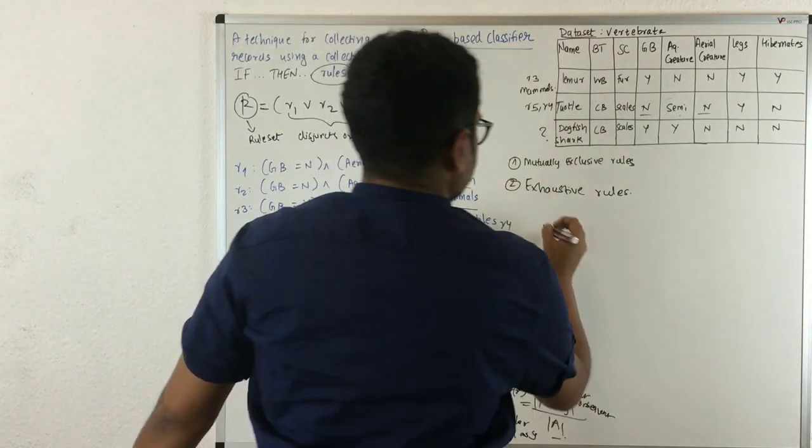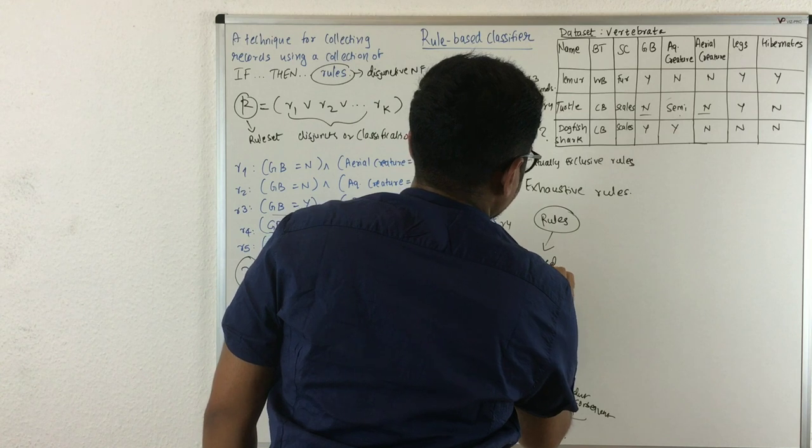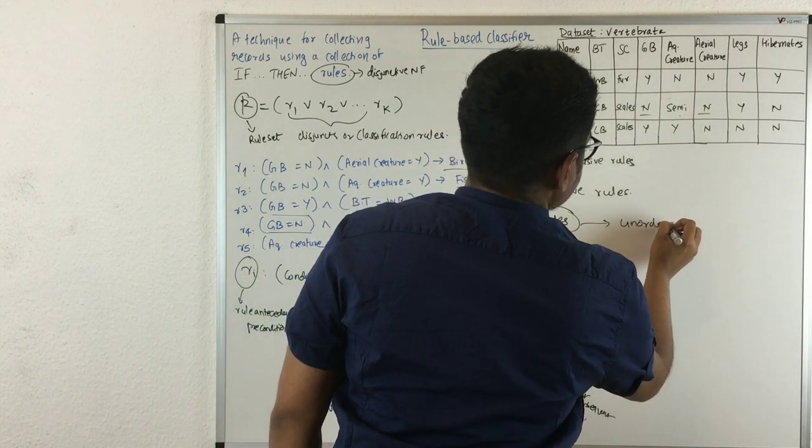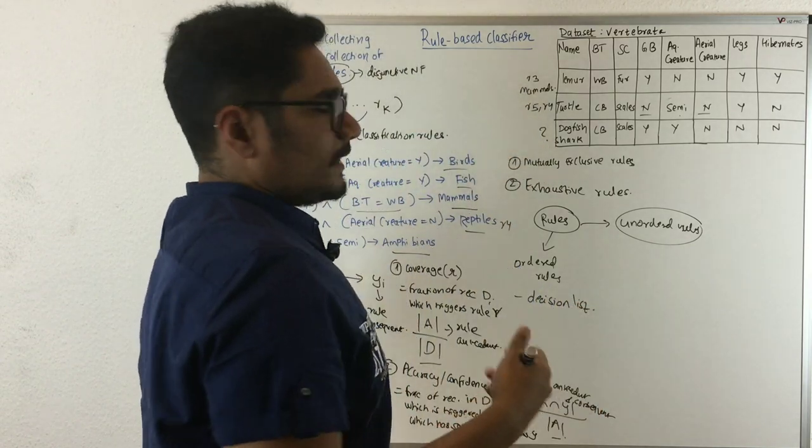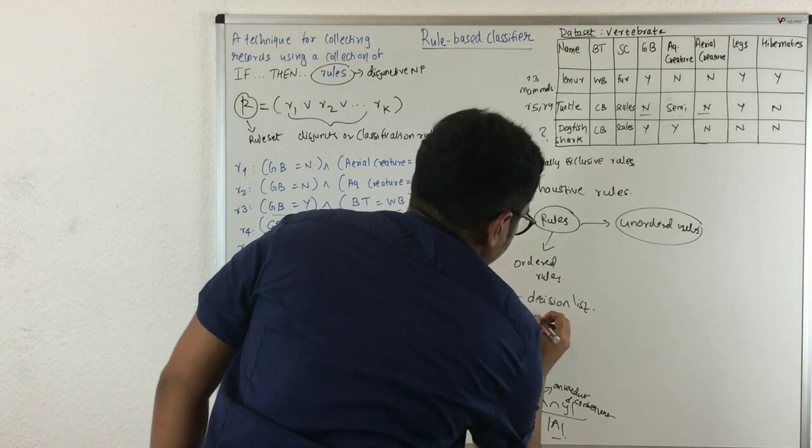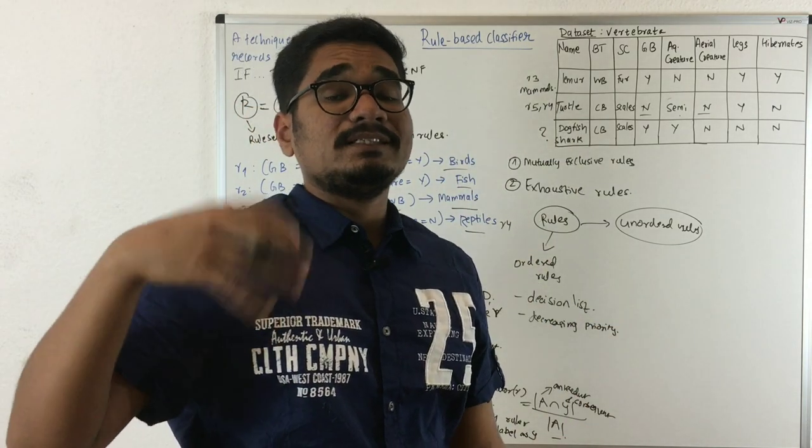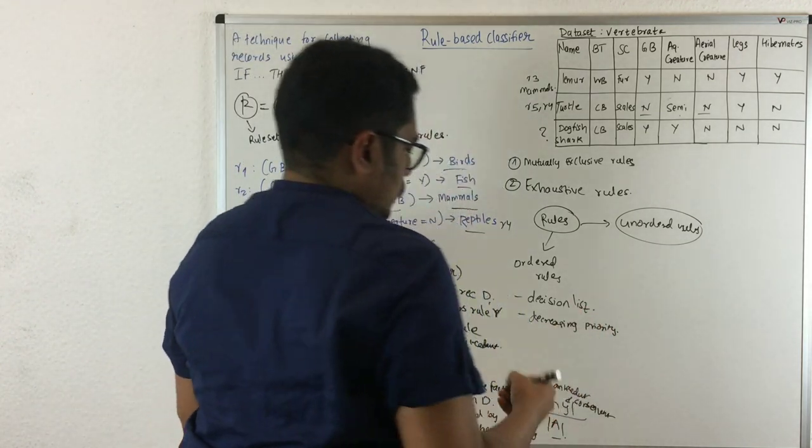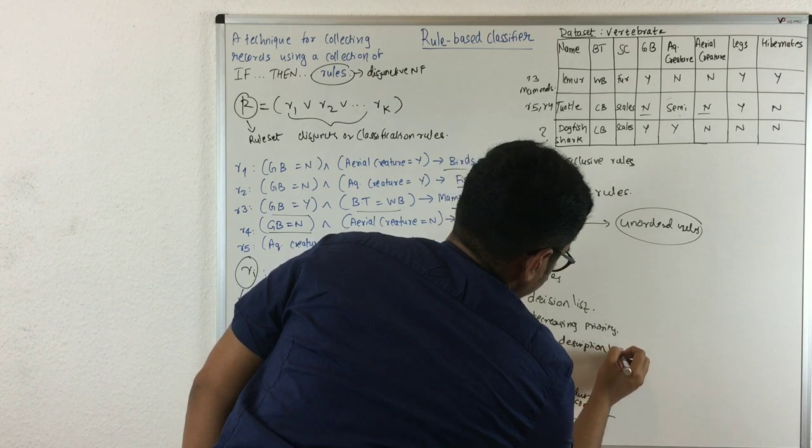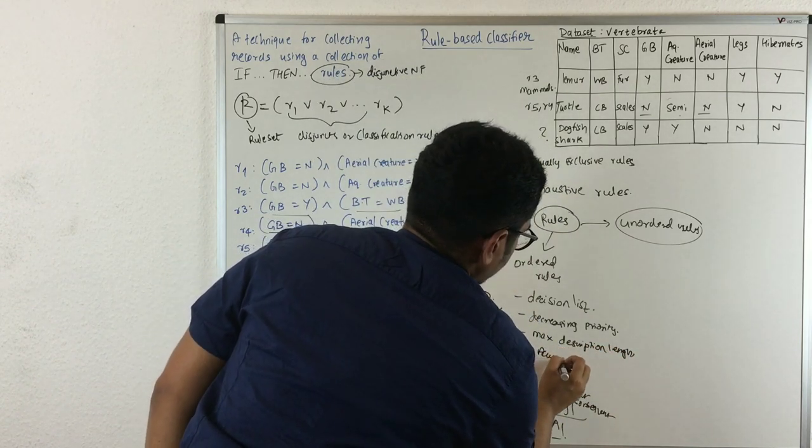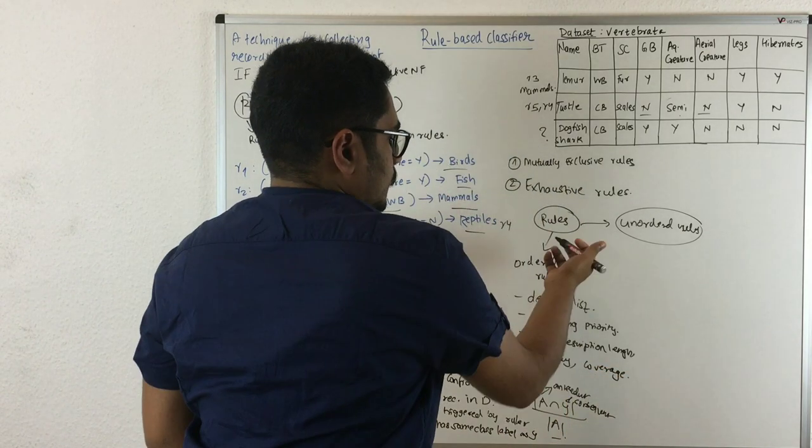Rules in rule-based classifiers are of two types. First we have ordered rules, and then unordered rules. Ordered rules are also called decision lists. They categorize the classes into decreasing priority, meaning whichever has the lowest priority goes up and highest priority goes down. This is done with maximum description length, or you can combine with accuracy or coverage. With this you create ordered rules.